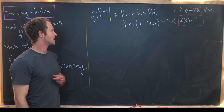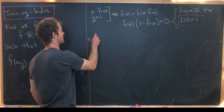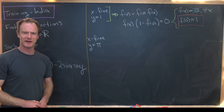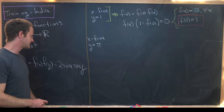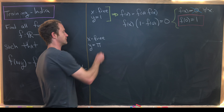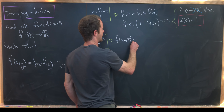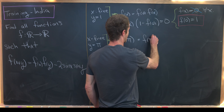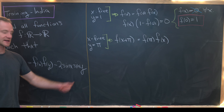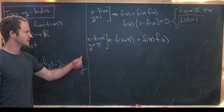Now we're ready to start plugging in other values for x and y. We'll take x as a free variable and set y equal to π, because we know the value of sine and cosine at π. That gives us f(x+π) = f(π)·f(x) − 2·sin(x)·sin(π). Since sine of π is equal to zero, that last term vanishes.